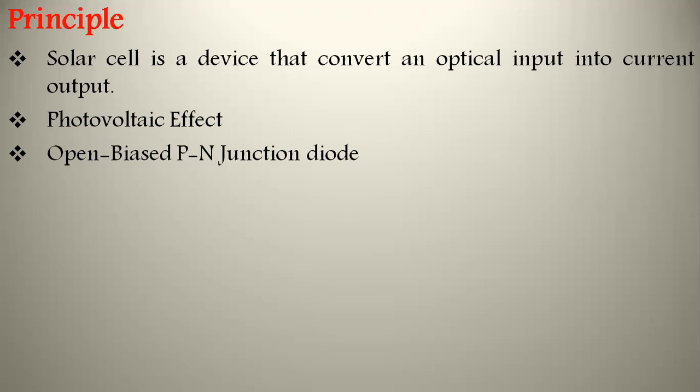It can be constructed by using an open-biased p-n junction diode. When semiconductor materials are exposed to light, some of the photons are absorbed by the semiconductor crystal, which causes a significant number of charge carriers in the crystal. This is the basic principle for producing electricity with solar cell.